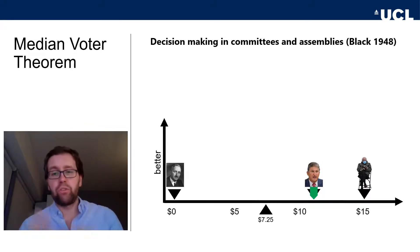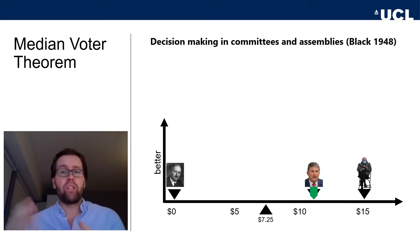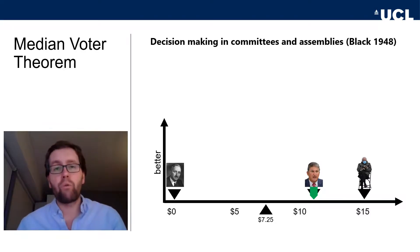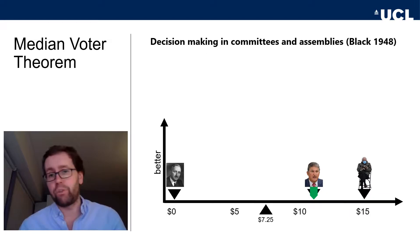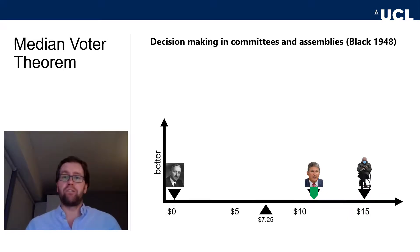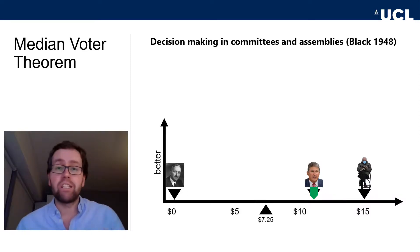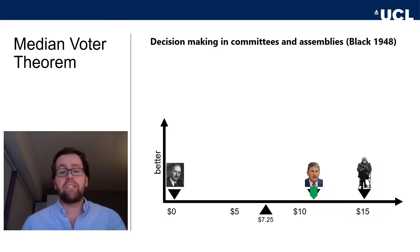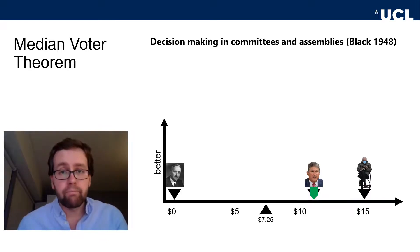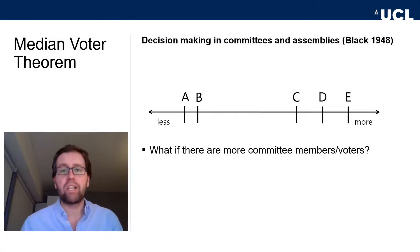Any other point to the left or right of Joe's ideal point would be defeated, because there's always Joe and a voter on the other side to vote against it. So arriving at exactly his most preferred outcome is the result of this process. This is the basic logic of the median voter theorem, and it is quite a powerful prediction: whoever sits in the middle of the distribution gets exactly their most preferred policy outcome. In our previous example we had three voters — what if we have five or more?